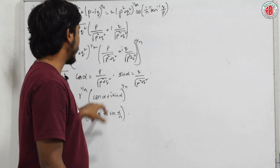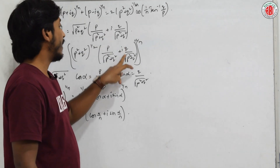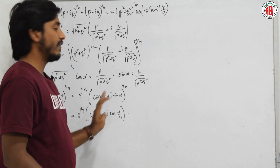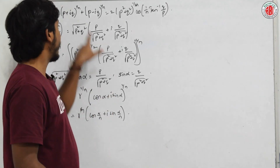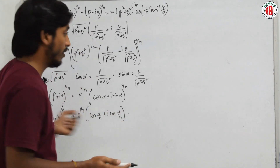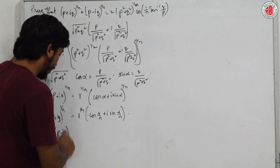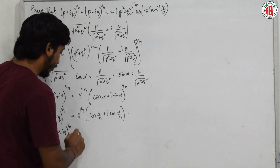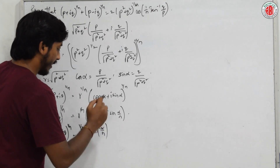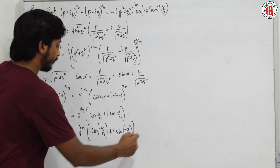For the second term p − iq: since the imaginary part is −q, the sine part becomes −q / √(p² + q²), so we write −α instead of α, because sin(−α) is negative and cos(−α) is positive. Therefore, (p − iq)^(1/n) = r^(1/n) · (cos(−α/n) + i sin(−α/n)).